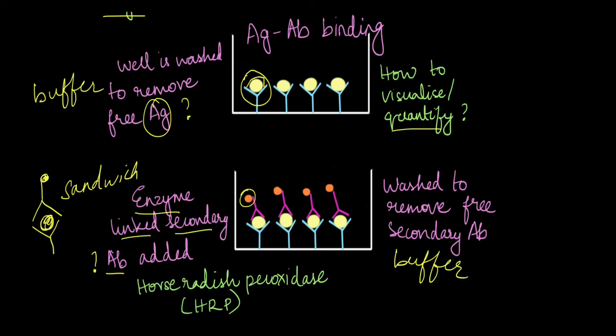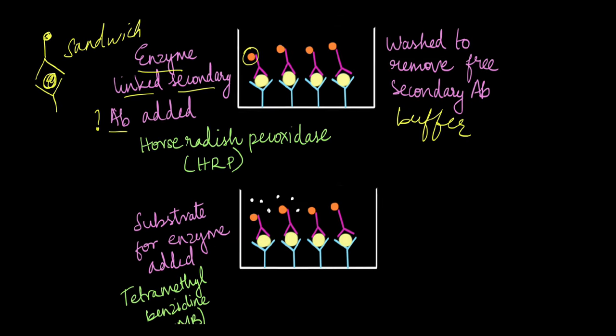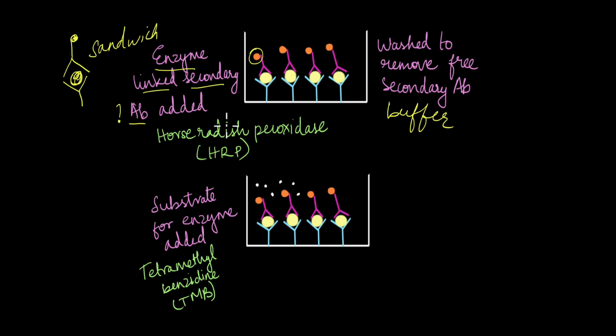After it is washed, to this well we're going to add the substrate for this enzyme. So an enzyme is something that converts a substrate to a product, right? The substrate for this HRP enzyme is called tetramethylbenzidine. These white color dots here, these represent this tetramethylbenzidine, and this is added to the well. Here's where washing with a buffer is very important.